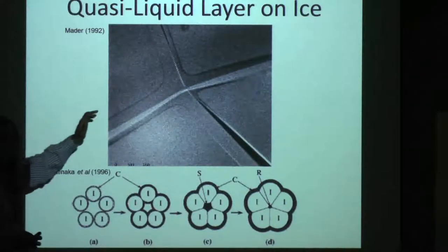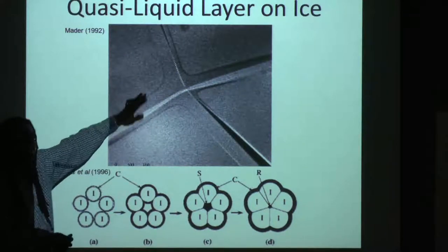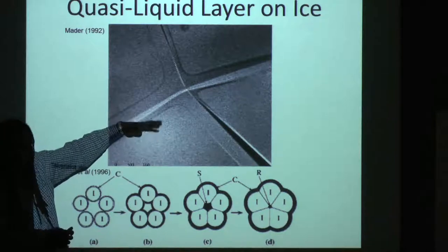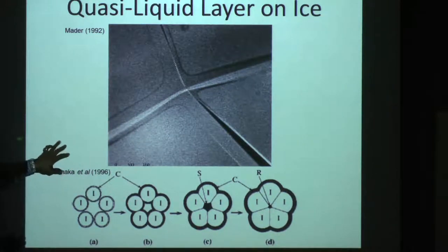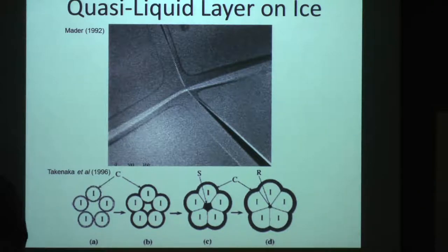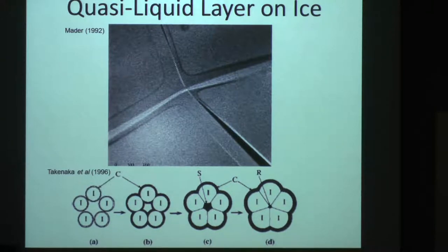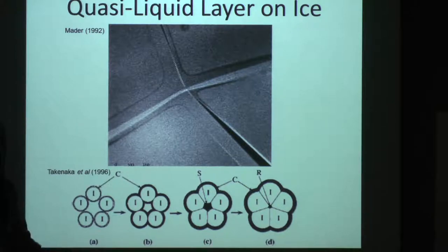I mentioned in that diagram that things diffuse up and then reach this quasi-liquid layer. What really happens is that if you have a glass of water and you dump two things in there that you know are going to react — like iodine and ozone — and then you freeze it, most solutes actually segregate from the ice lattice.